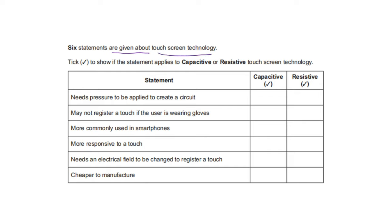Six statements are given about touchscreen technology. Tick to show if the statement applies to capacitive or resistive. Needs pressure to be applied to create a circuit — that is resistive. It may not register a touch if the user is wearing gloves — that is capacitive. More commonly used in smartphones — capacitive. More responsive to a touch — capacitive. Needs an electrical field to be changed to register a touch — also capacitive. Cheaper to manufacture — that is resistive.